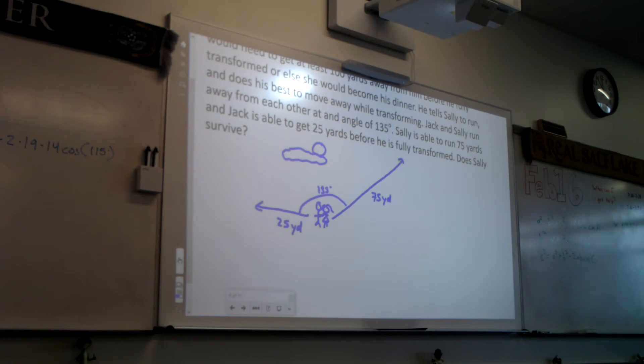Now what is the question we want to know? What are we trying to find? It's not hypotenuse if it's not a right triangle, but the longest side. Now we have this triangle here and we're trying to find this distance. If it's more than a hundred yards, what does that mean? What does it mean for Sally? What if it's less than a hundred?